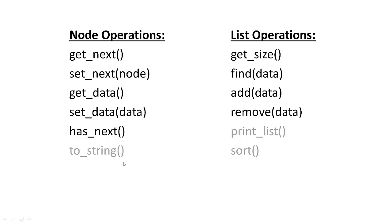We'll also use a to-string method in a future video. For list operations, we want to get the size of the list — the number of nodes — keeping a counter that increments when we add a node and decrements when we remove one. We'll have a find operation to locate data by iterating through the list, an add operation, and a remove operation. In a future video, I'll also show how to print the list and write a sort algorithm.